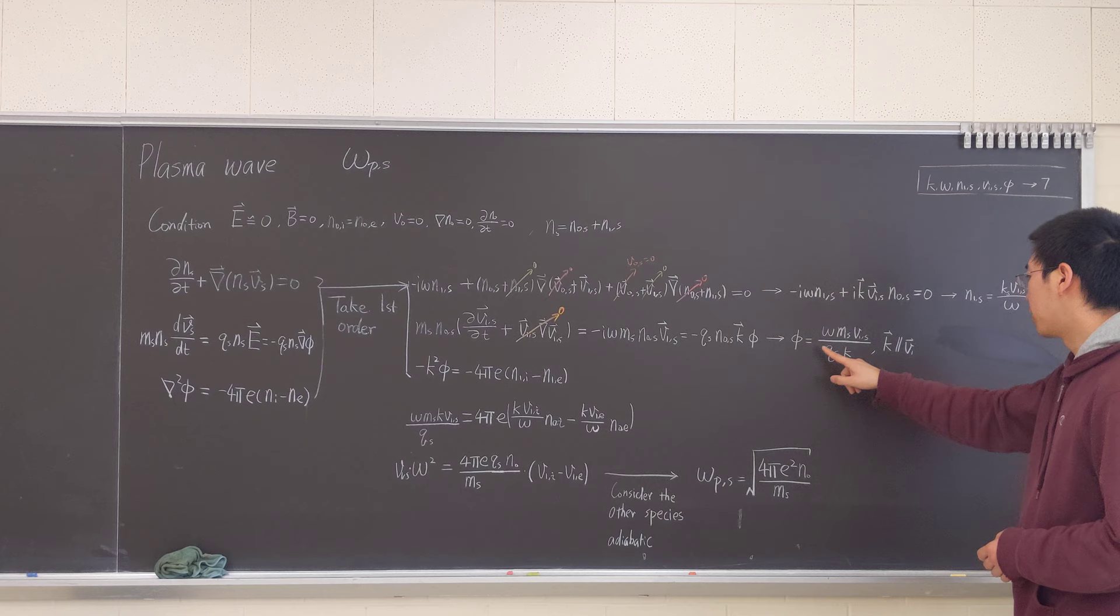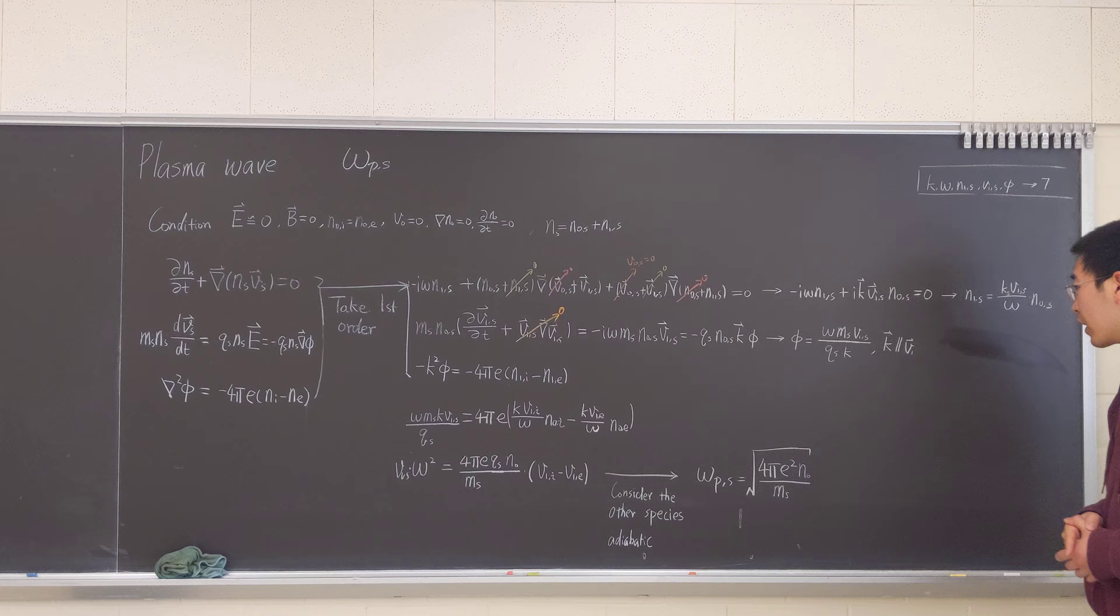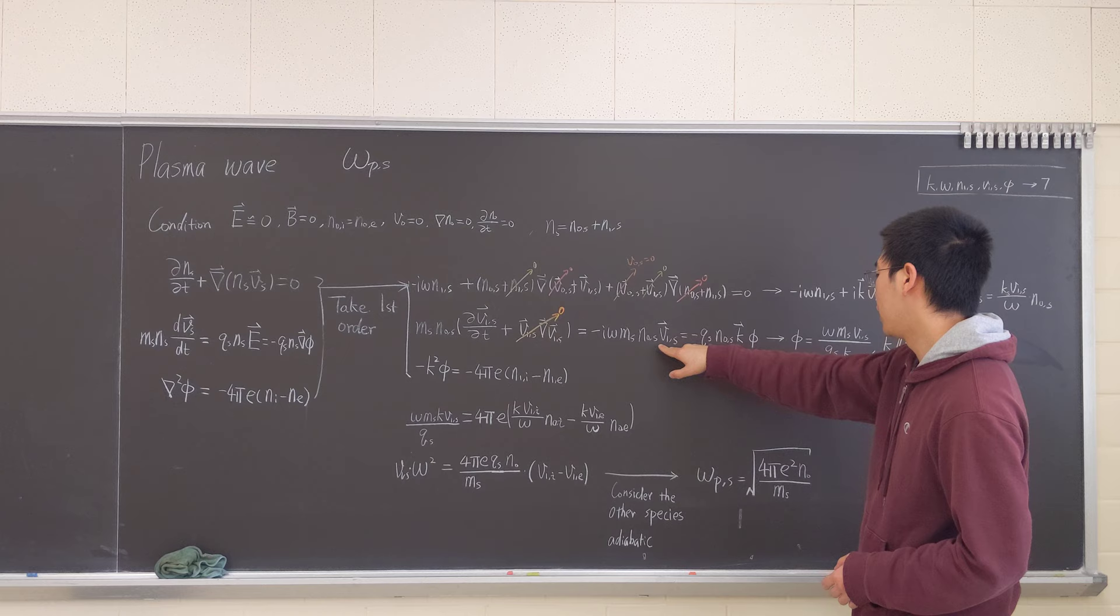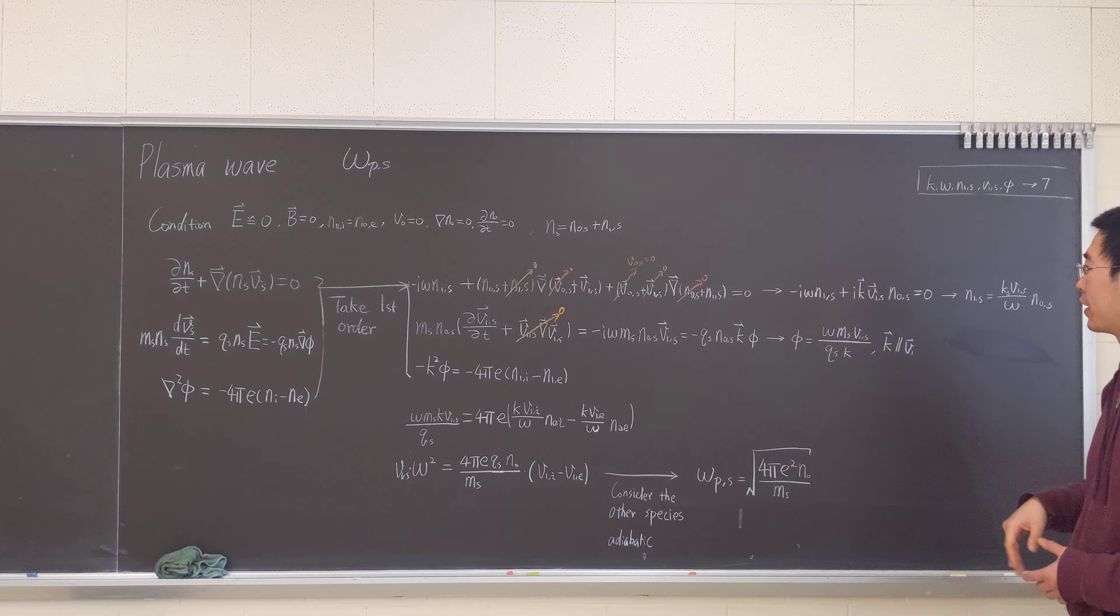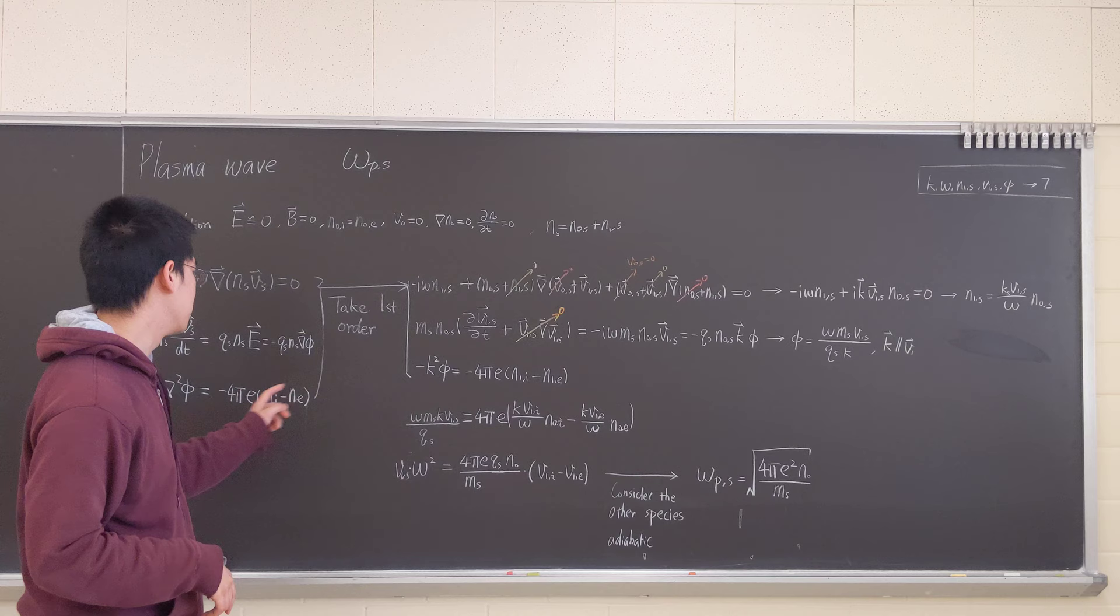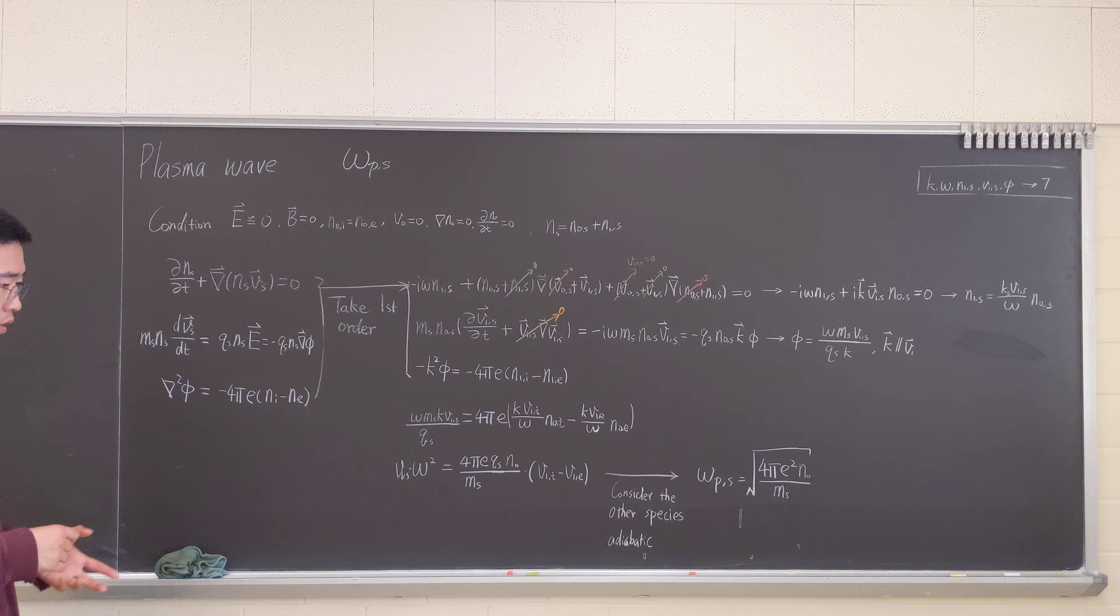Negative i omega M S N0 V1 equals negative Q S N0 K phi. And we get this equation: Phi equals omega M S V1 over Q S K. And from this equation, we also can tell that V1 is parallel to K.